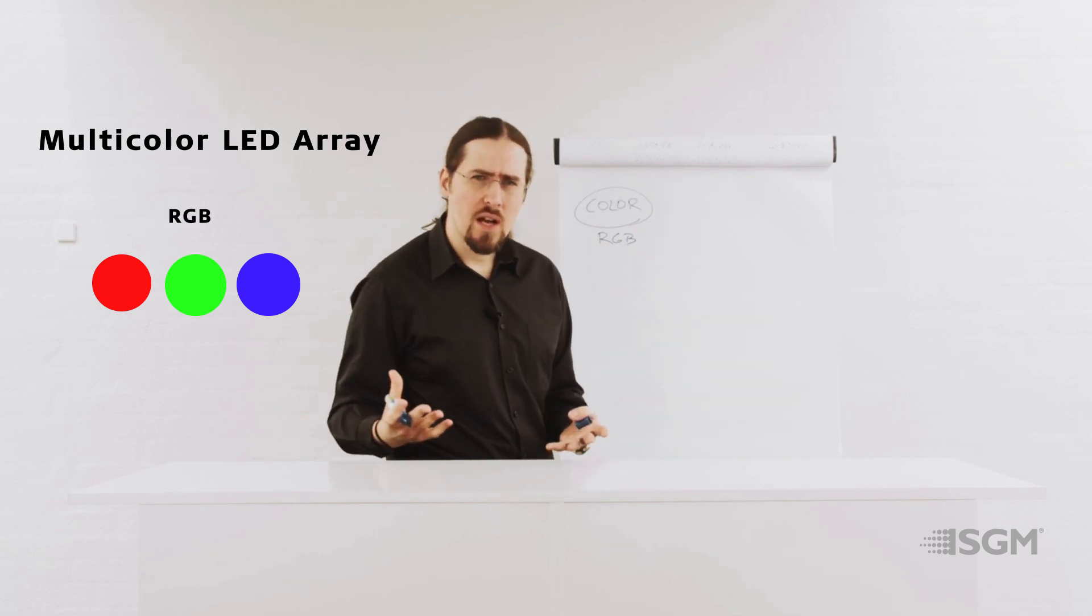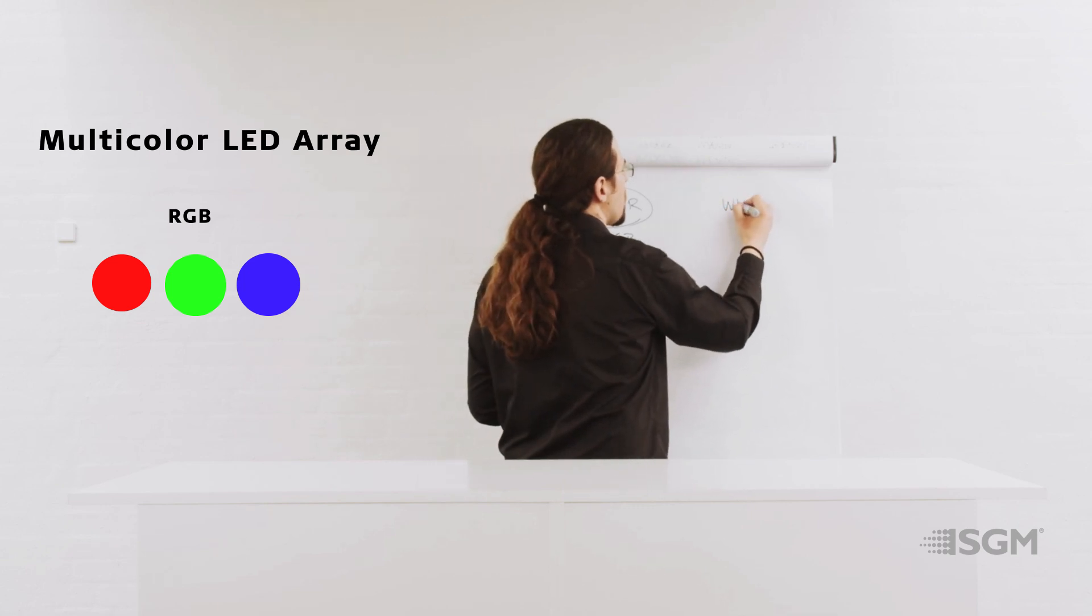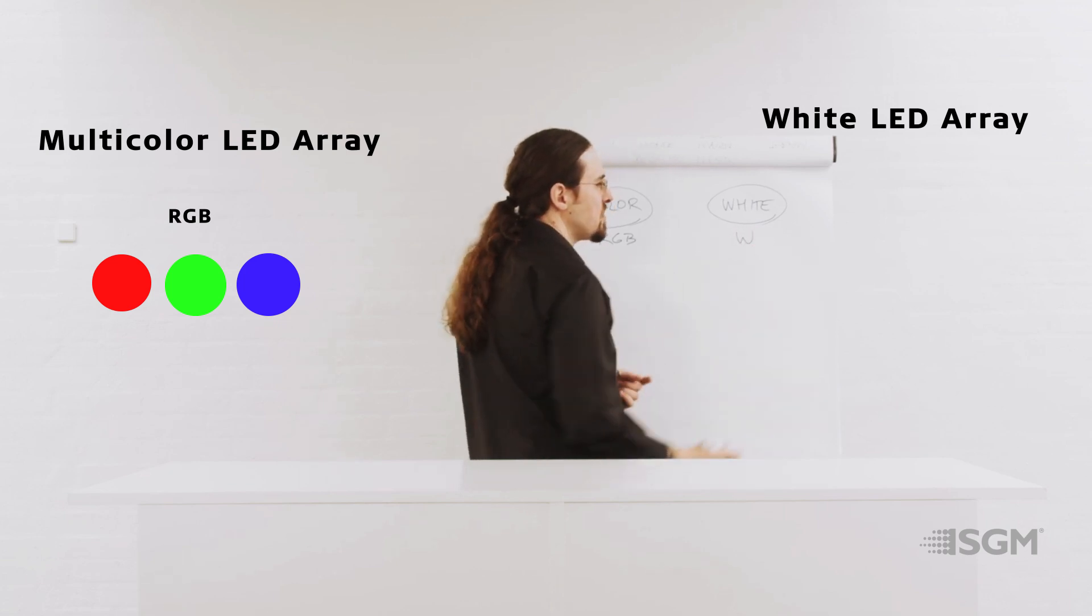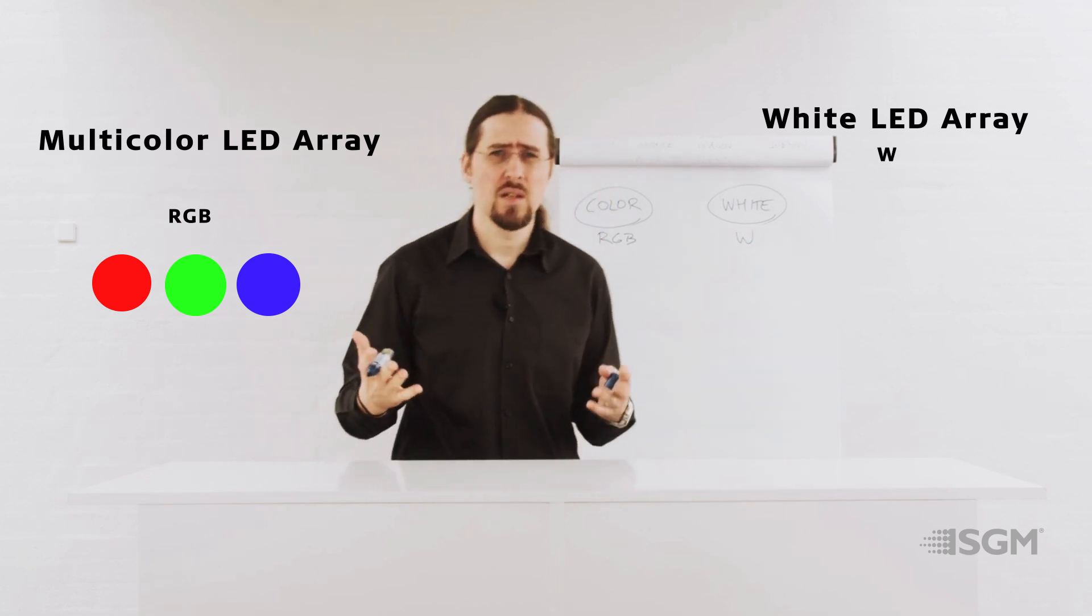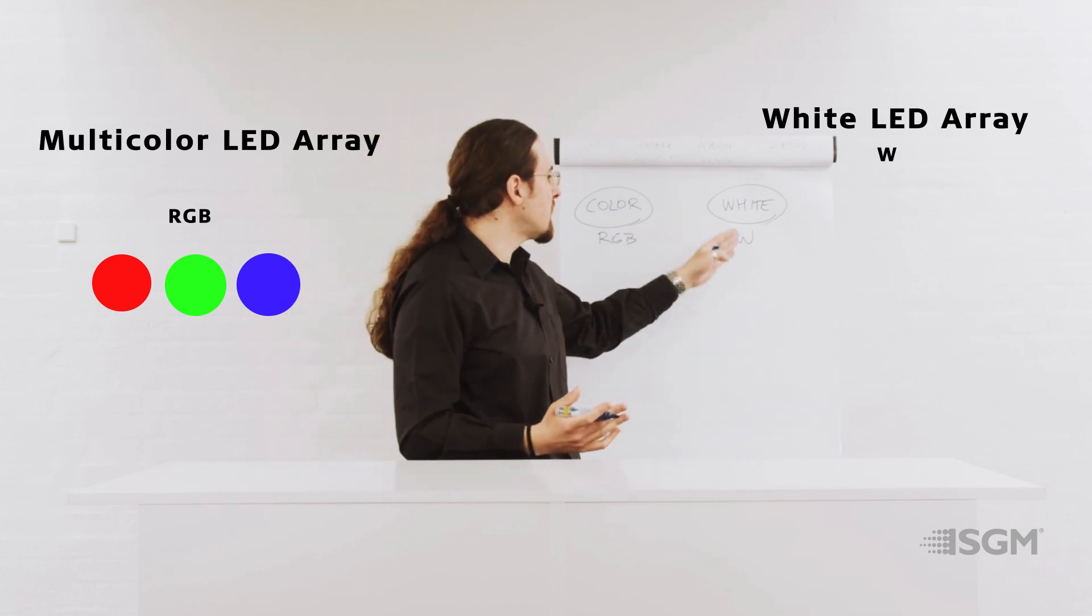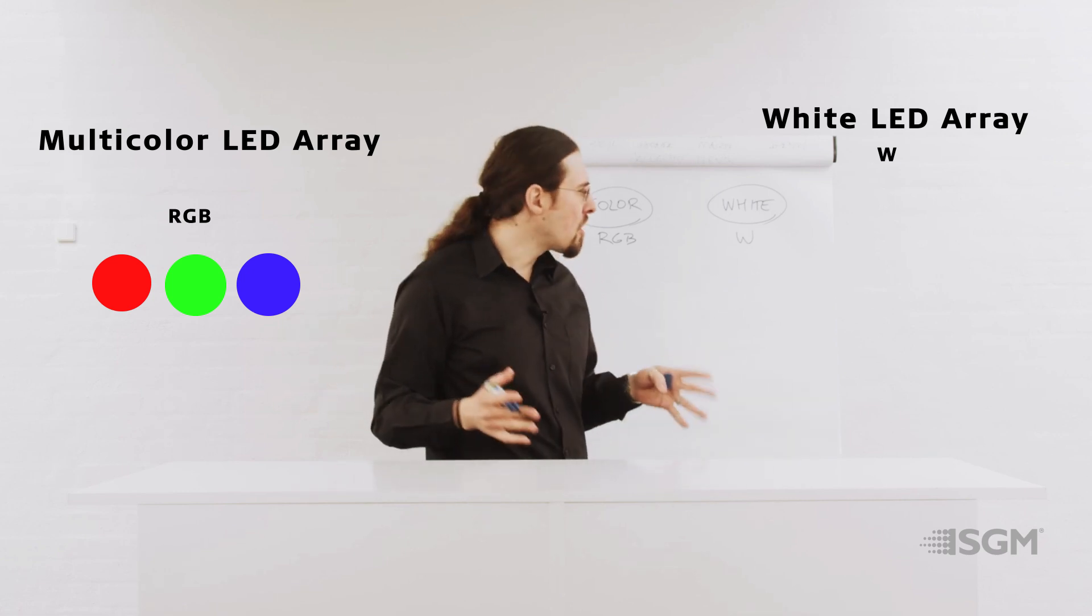And then we have another type of light source, LED light source, which is a white light source. And in a white light source, normally we refer to it as a white, because it's a white LED. But it's very important to understand that this white LED might have different color temperatures.